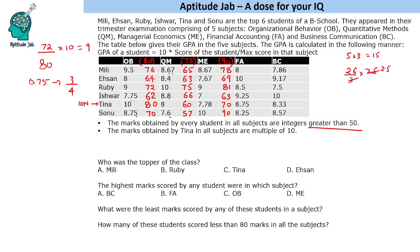For FA, the decimals 0.25, 0.75, 0.25 again indicate a multiple of 4. As before, taking 40 gives values less than 50, so we use 80. Multiplying: 8 × 8 = 64, 8.5 × 8 = 68, 9.25 × 8 = 74, 8.75 × 8 = 70, 8.25 × 8 = 66. Maximum marks for FA are 80.